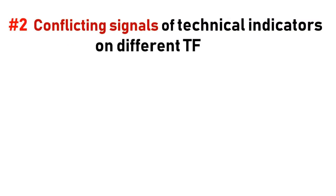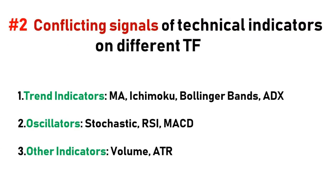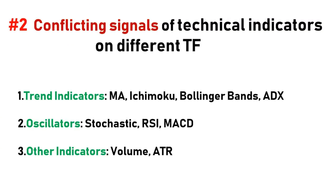The second thing is technical indicators. We're looking for a typical trend, so if we look for trend indicators like moving averages, Ichimoku, Bollinger Band, ADX, or oscillators like Stochastic, RSI, MACD, and ATR.